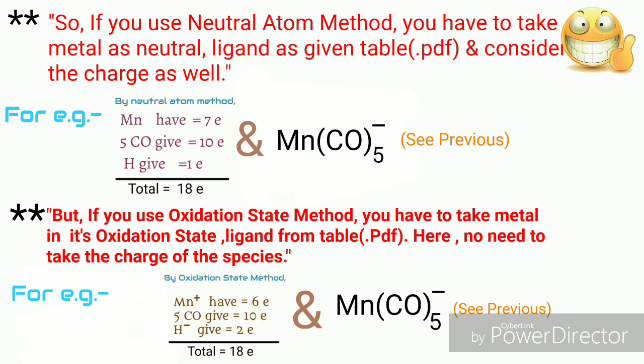So if you use neutral atom method, you have to take metal as neutral and ligand as given in the table and consider the charge as well. But if you use oxidation state method, you have to take metal as its oxidation state, ligand from table, and here no need to take the charge of the species. These two are two important points and you should remember these as well.